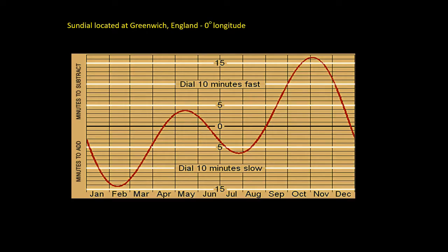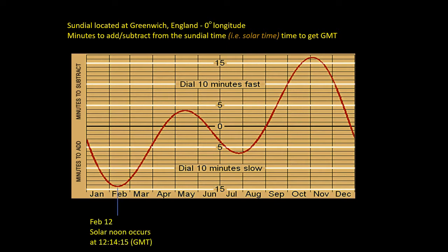The graph shows for Greenwich the difference between solar time and GMT. This variation runs between the sundial being 14 minutes and 15 seconds slow on February the 12th — so when it shows 12 noon it'll be 12:14 and 15 seconds GMT — and the sundial being 16 minutes 25 seconds fast on November the 3rd, so when it shows 12 noon it will be 11:43 and 35 seconds GMT.